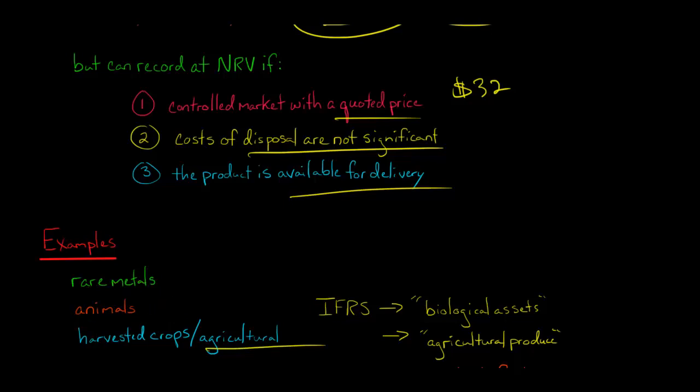IFRS actually splits the animals and the produce that comes from them into two types of assets. IFRS has biological assets, which would be like the sheep, for example. And then agricultural produce is what comes from the sheep, like wool.